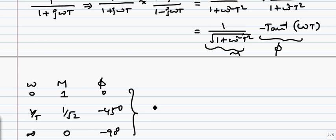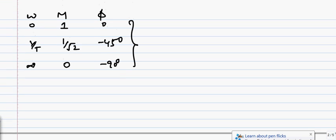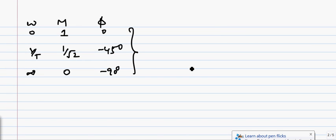Looking at these values of φ, they change between 0 and −90° as ω changes from 0 to infinity. This plot of magnitude and phase in the complex plane is going to lie in the fourth quadrant, which is the area where the angle is between 270° and 360°, equivalent to −90° to 0°.